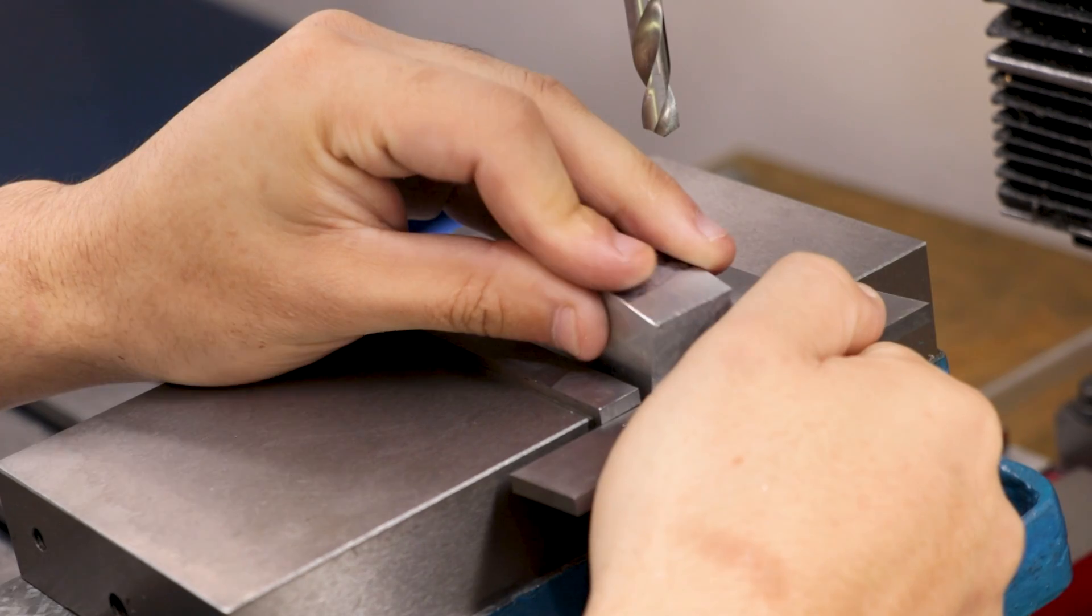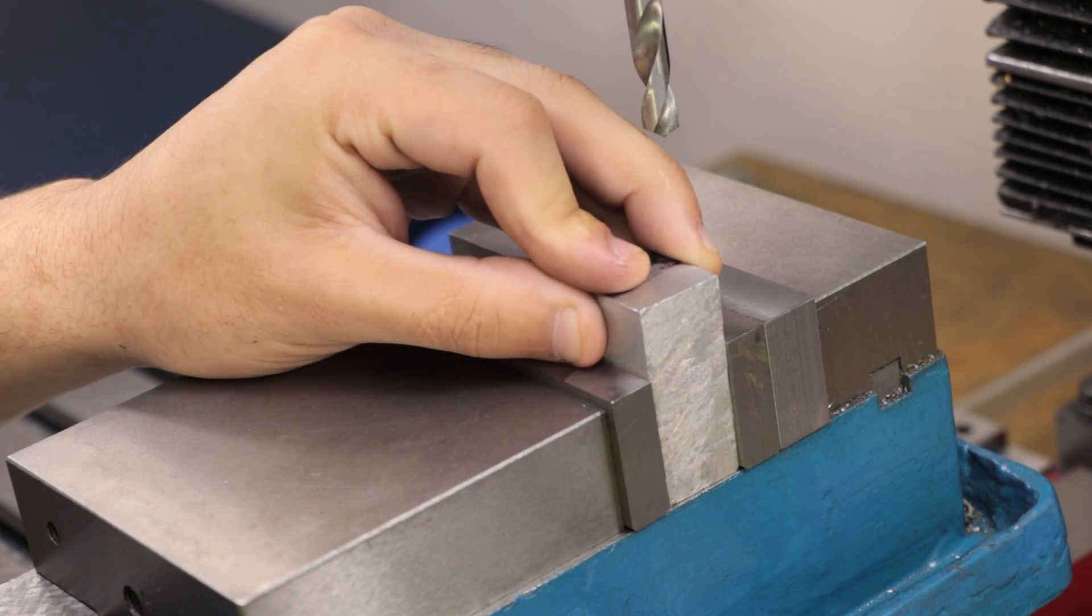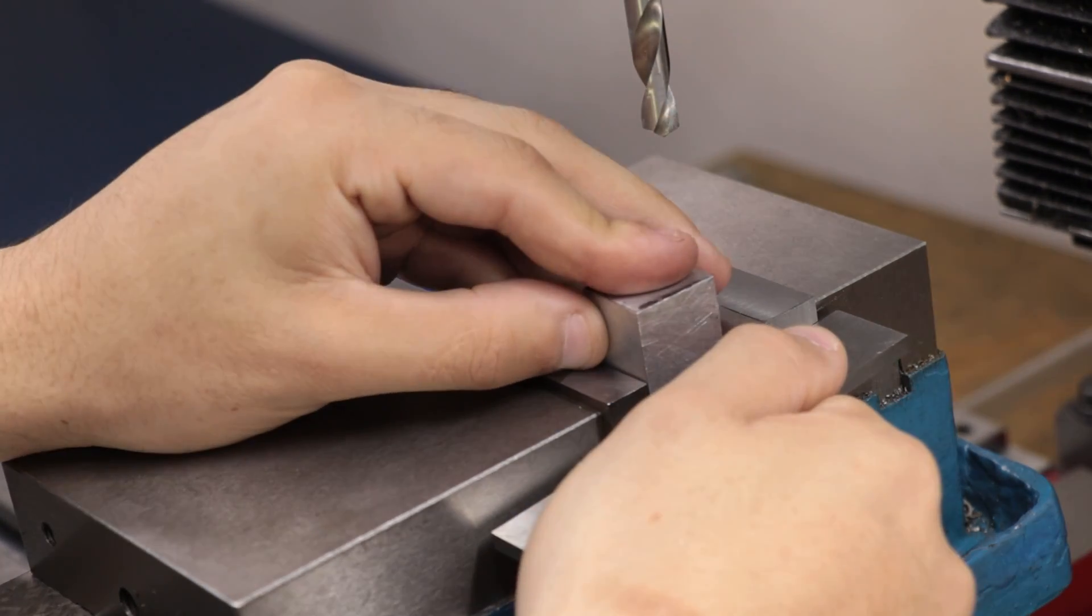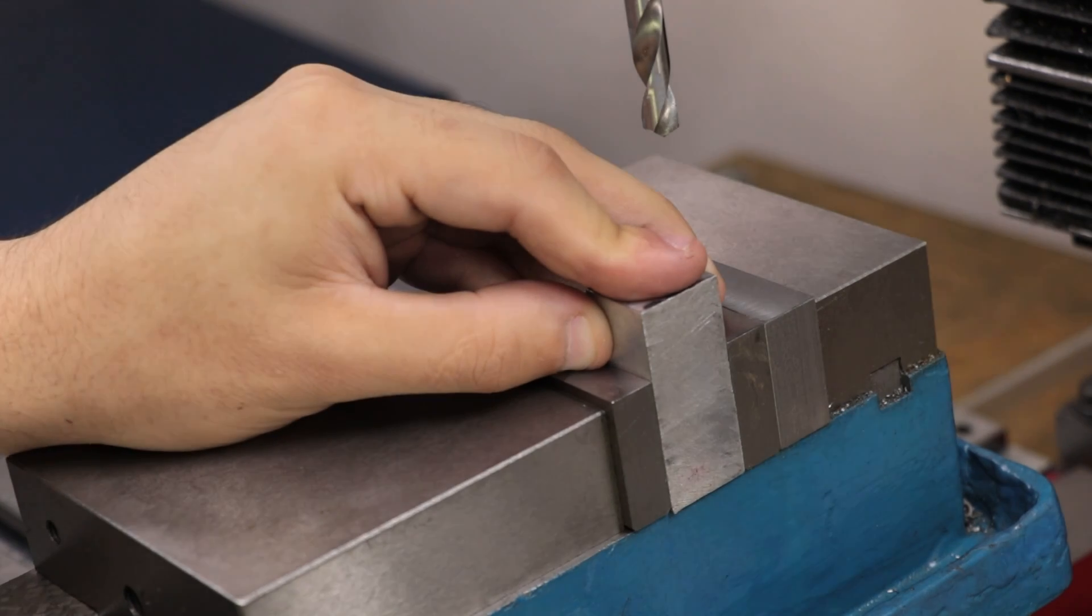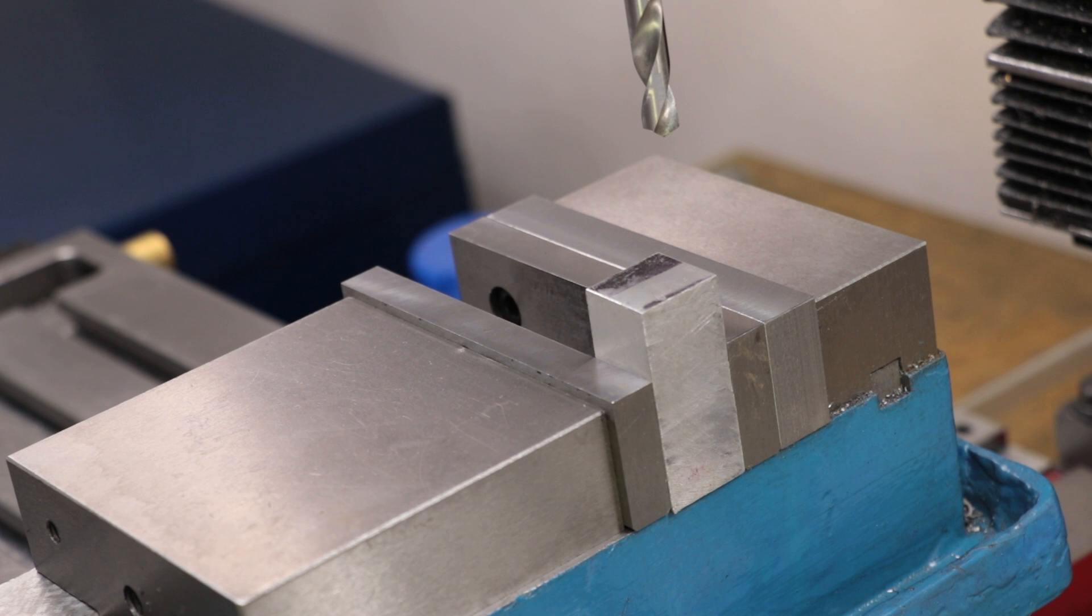I'll line it up with the end of the vice jaws and then indicate it in. Now if I took the part out in order to flip it, or say I'm machining ten of these and they need to be all identical, I could then use the end of the jaws as my reference.